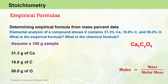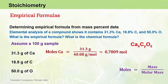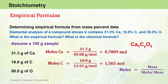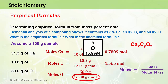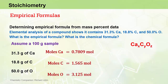Moles of calcium equals 31.3g divided by the molar mass of calcium, 40.08 g/mol, giving 0.7809 moles. Moles of carbon equals 18.8g divided by 12.01 g/mol, giving 1.565 moles. Moles of oxygen equals 50.0g divided by 16.00 g/mol, giving 3.125 moles. So in our 100g sample, we have 0.7809 moles of calcium, 1.565 moles of carbon, and 3.125 moles of oxygen.